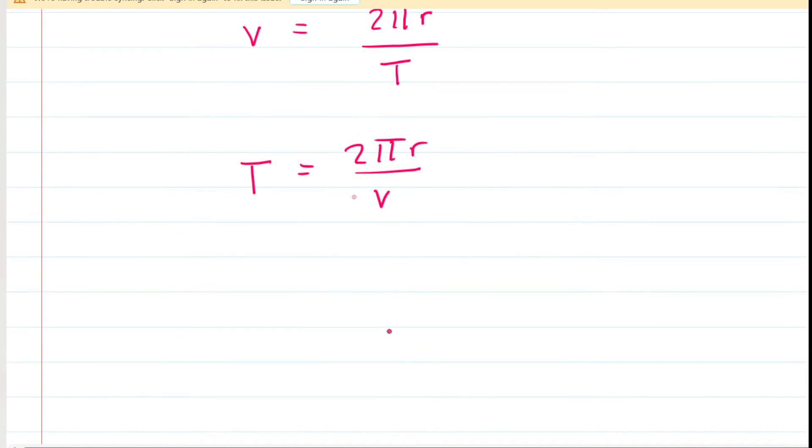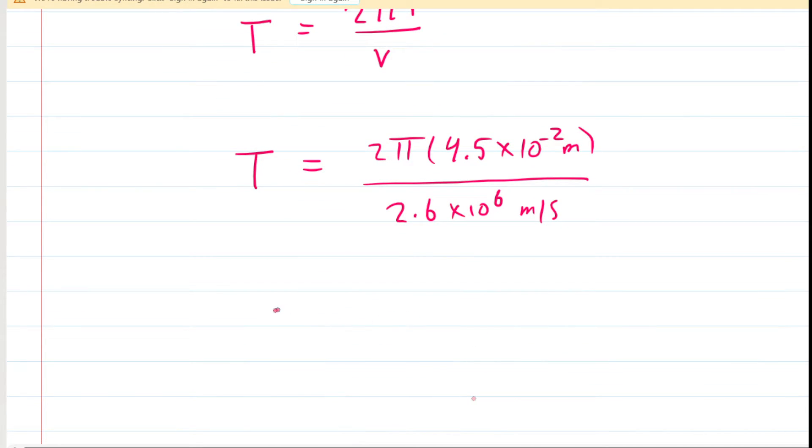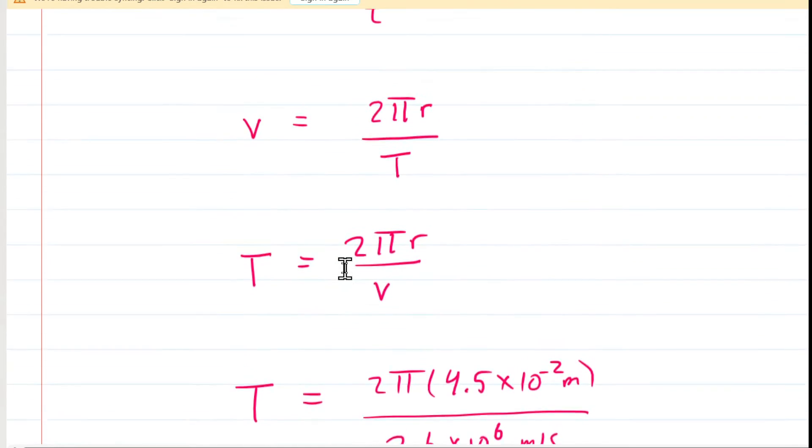We can go ahead and plug in the radius and the speed we calculated in part A. And when we compute that, we can see the period is approximately 1.09 times 10 to the minus 7. This is going to be in seconds. So that's how long it would take for the charged particle to go one trip around the circular path. Not a lot of time at all.